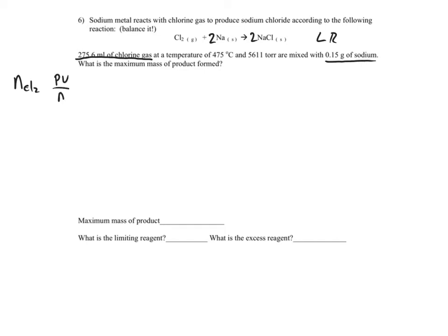First we need to figure out the moles of chlorine gas, so we're going to use PV over RT to give us the moles of chlorine gas that are initial. It's 5611 torr over 760 torr, that takes us to atmospheres, and we have a 0.276 liter flask, R is 0.0821, and 748 Kelvin.